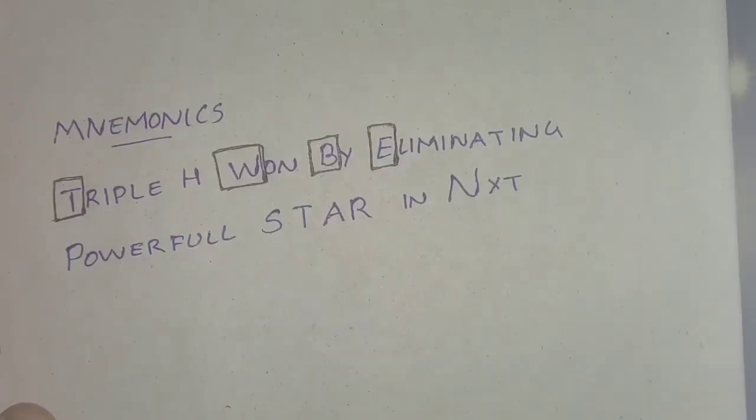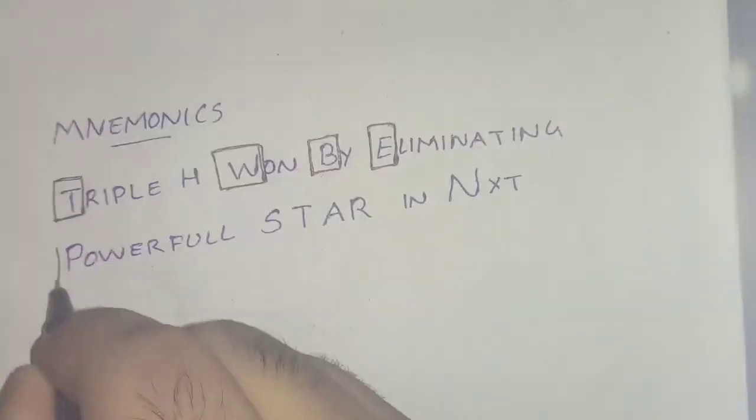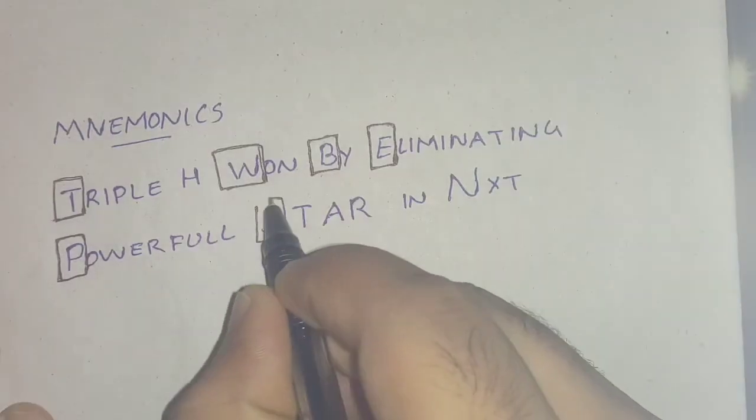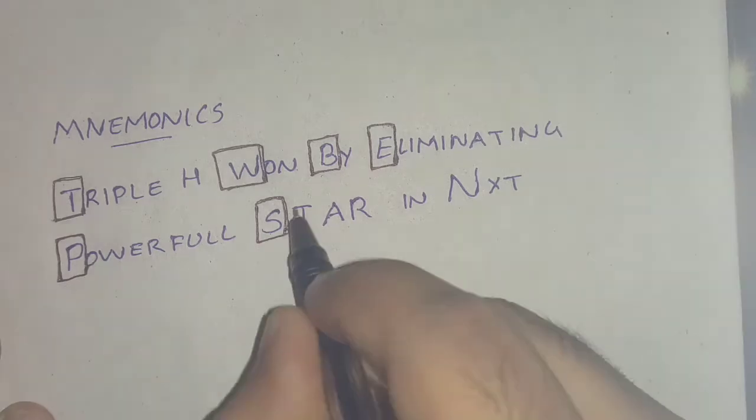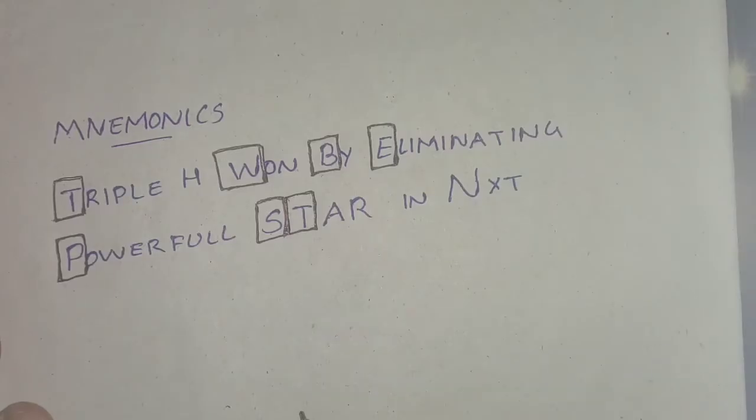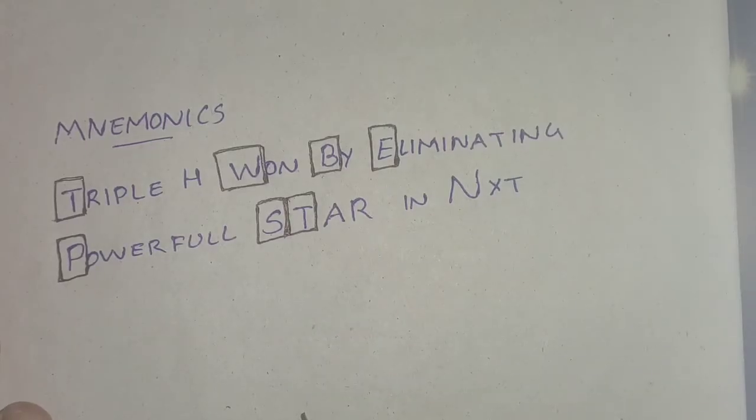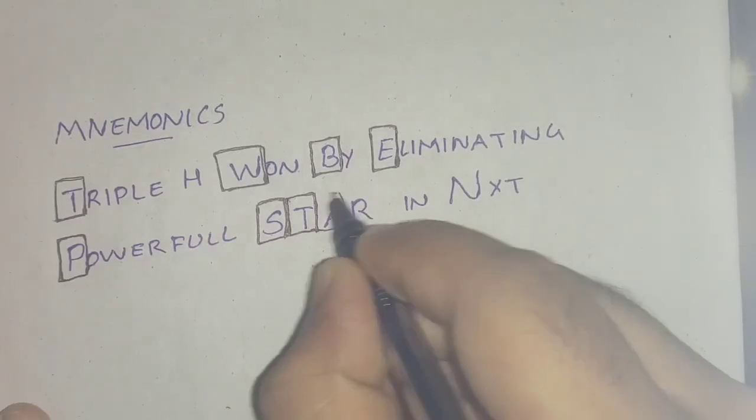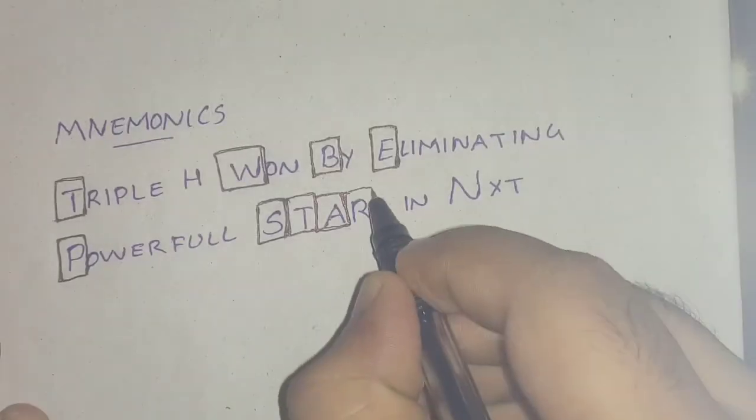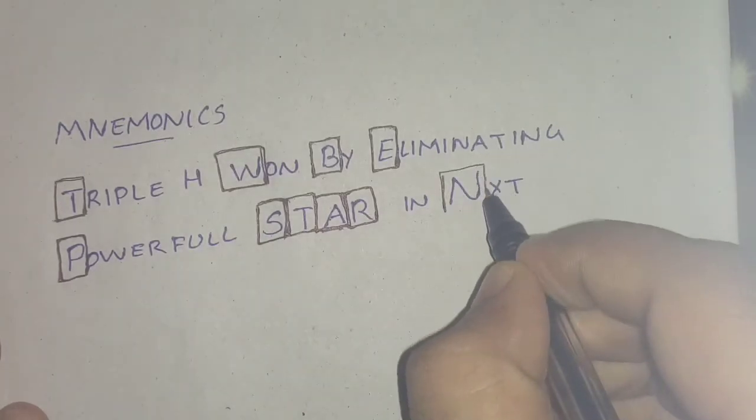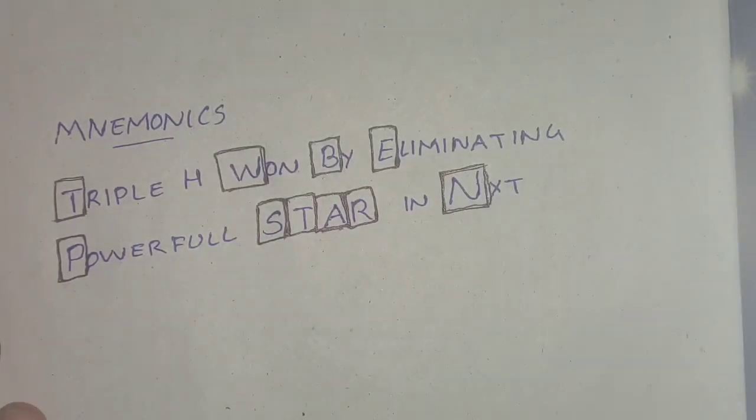And P for the protective function, S for the storage function, T for the regulation of temperature, A for the acid-base balance. Now the next is R for the respiratory function and the last one, N for the nutritive function.